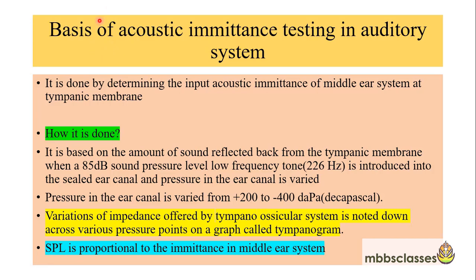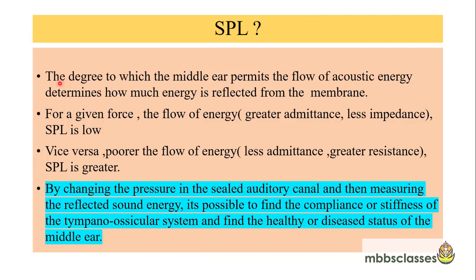The basis of tympanometry is the calculation of impedance by measuring the SPL. If energy is flowing freely through the tympano-ossicular chain, then very little energy will be reflected back. So SPL is proportional to the emittance in the middle ear system. The degree to which the middle ear permits the flow of acoustic energy determines how much energy is reflected from the membrane.